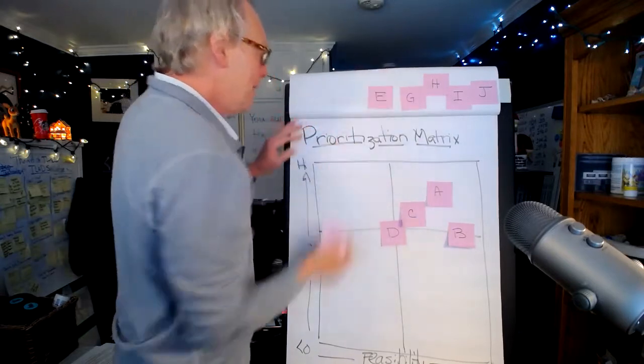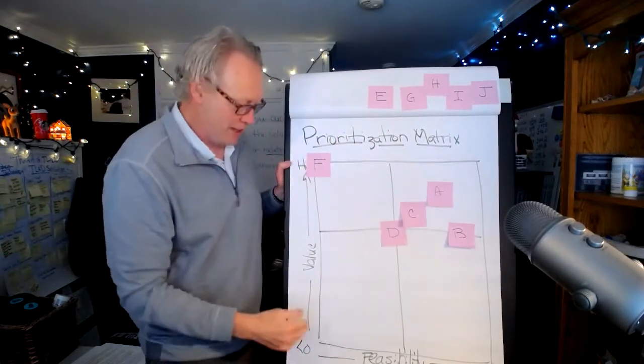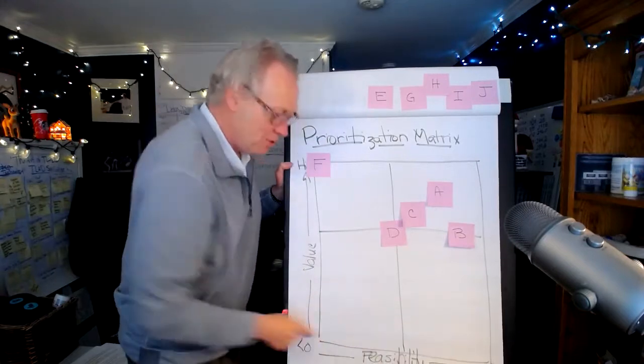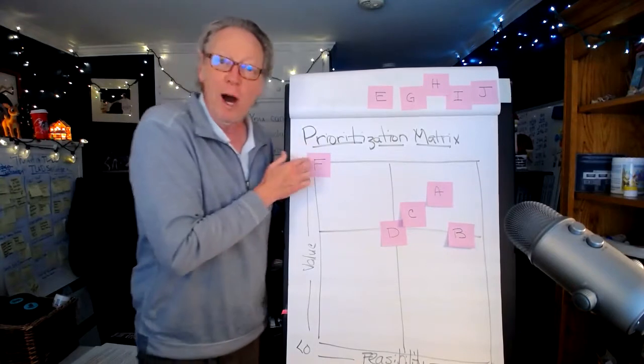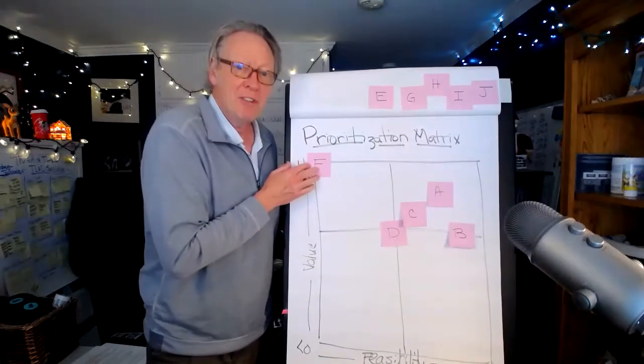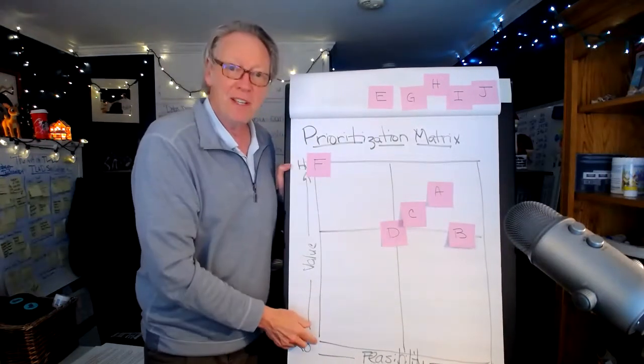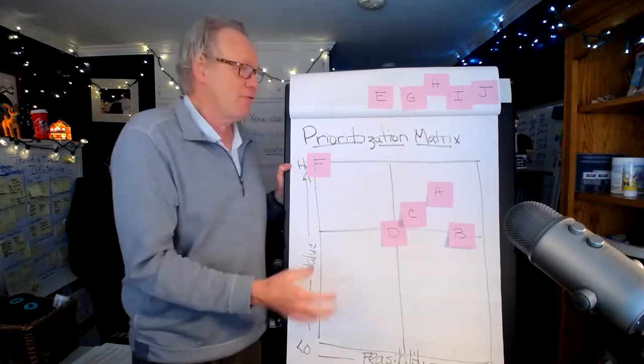And you'll have F that sits over here, which basically is one of those cases where it has high value but no feasibility of success. And by the way, I can't tell you how many organizations want to start here because it has the most value. It's also the most infeasible, so it's also like a formula to failure.